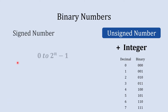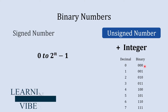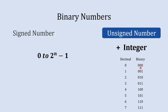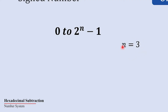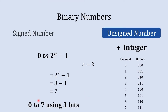We can represent the range as 0 to 2 raised to n minus 1, where n is the number of bits. So let's say here our digit is a 3-bit number. If we place n equal to 3, then 2 raised to 3 minus 1 gives us 7. So we can represent 0 to 7 using a 3-bit binary number in the unsigned number method.